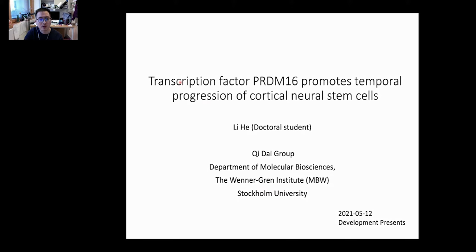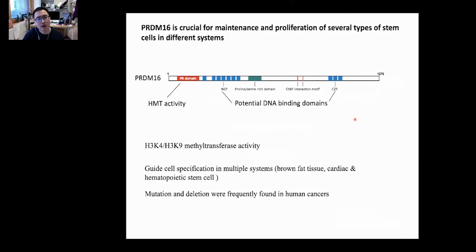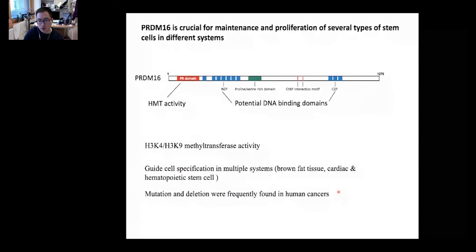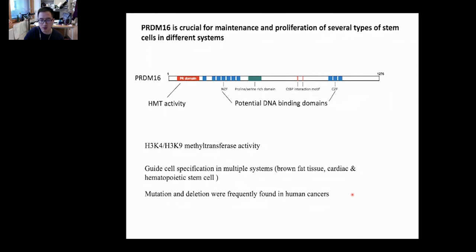We're particularly interested in a transcription factor called PRDM16. The PRDM16 has one PR domain and two zinc finger DNA binding domains and one CPBP interaction motif. Previous studies showed it has histone lysine methyltransferase activity. It is also able to guide cell specification in multiple systems, and its mutation and deletion were frequently found in human cancers. Only recently its functions in the nervous system have been revealed.